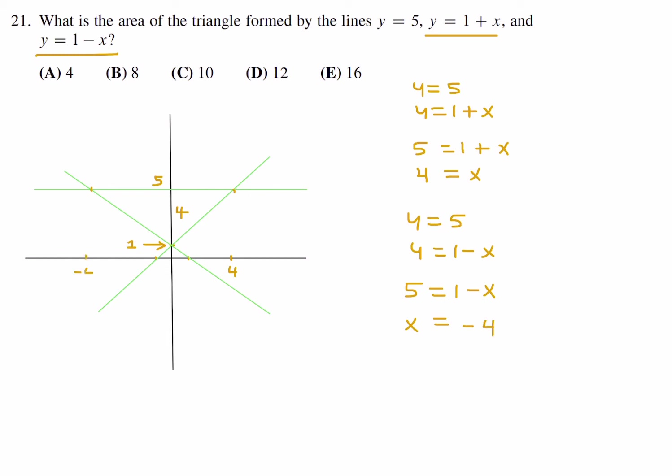And then the other intersection point is between y equals 5 and y equals 1 minus x. So 5 is equal to 1 minus x when you set them equal to each other, so this time x is negative 4. So this is negative 4. So that means the distance from here to here would be 8. So that triangle, the area is 1 half base times height, the base is 8, the height is 4, and that looks like 16. So number 21, the answer is E.